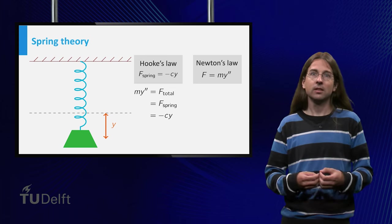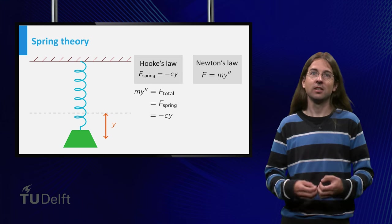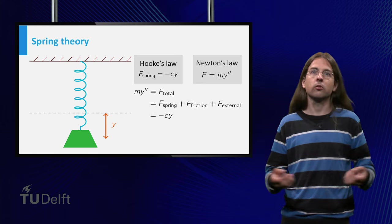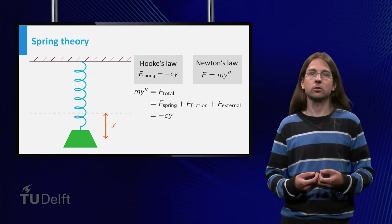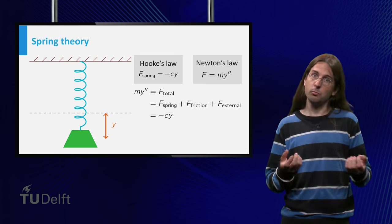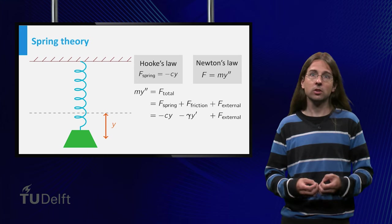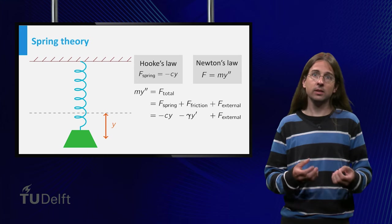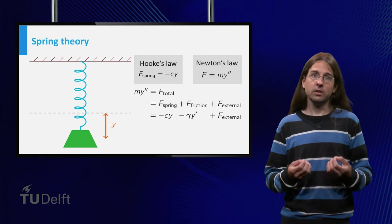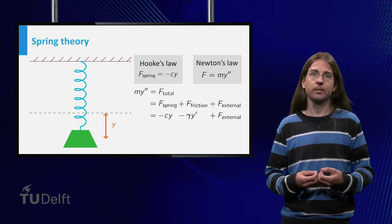In practice, there are more forces at work in this situation, in particular friction and/or an external driving force. Friction can, for small speeds, be modeled as the friction force equals minus gamma times the speed, where the speed equals the derivative y prime of y.